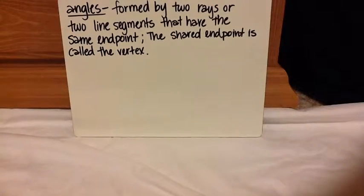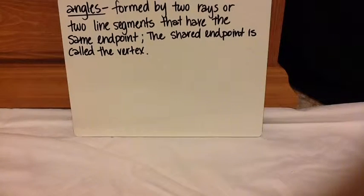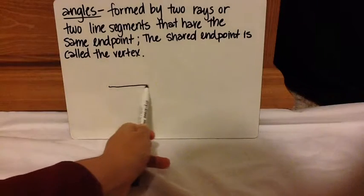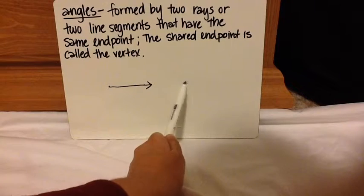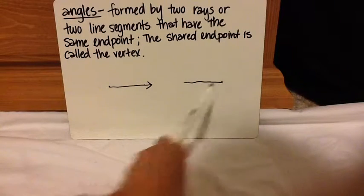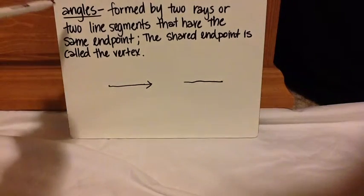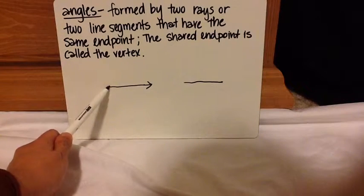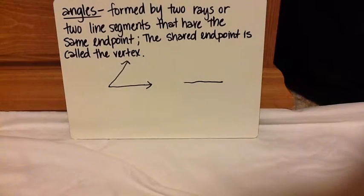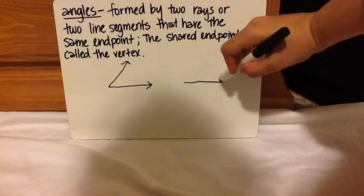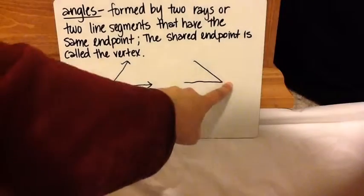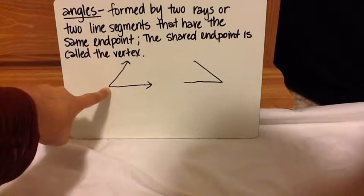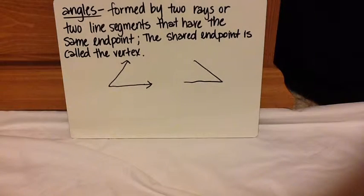Let's learn about angles now. In this definition, it has the word rays, which we talked about. A ray is a line with a point and it keeps on going in the other direction. There's also the word line segment, which is a part of a line joined by two points. So an angle is two rays connected, or two line segments. They both share the same end point. The shared end point is called the vertex — you might call it the pointy part.